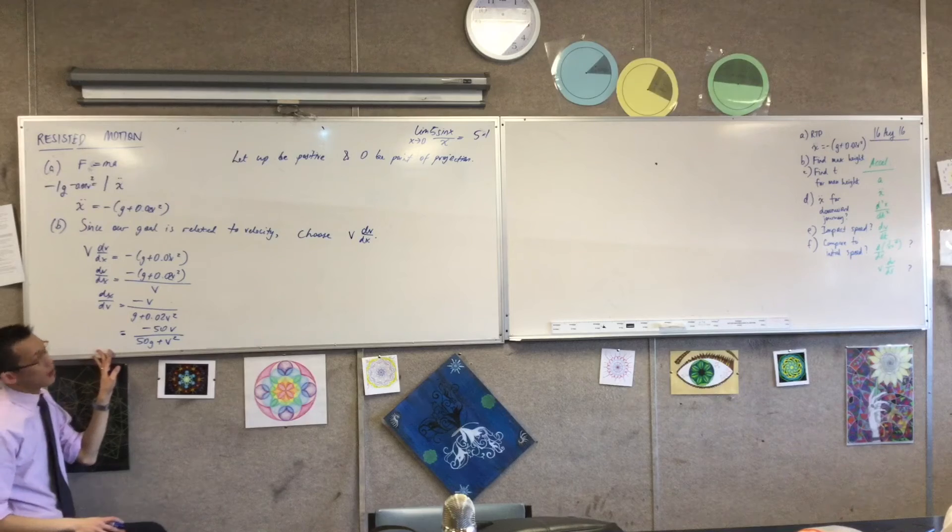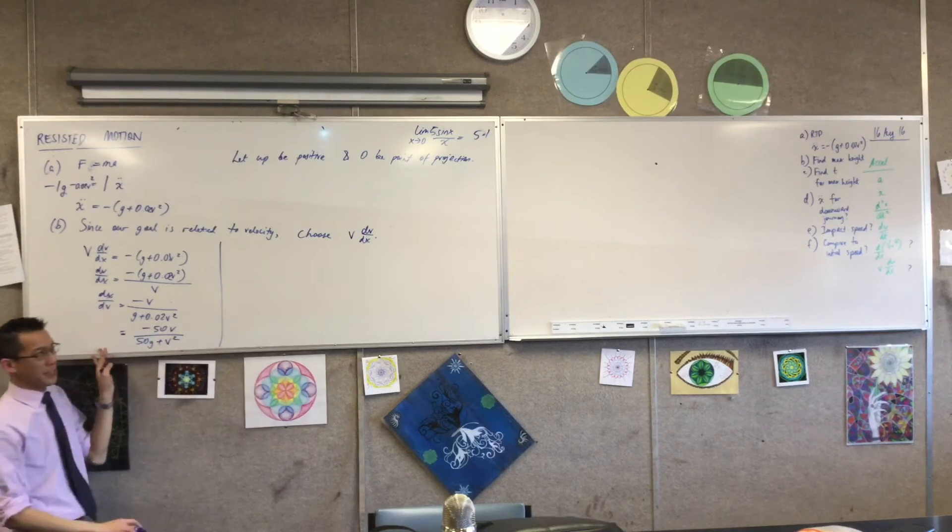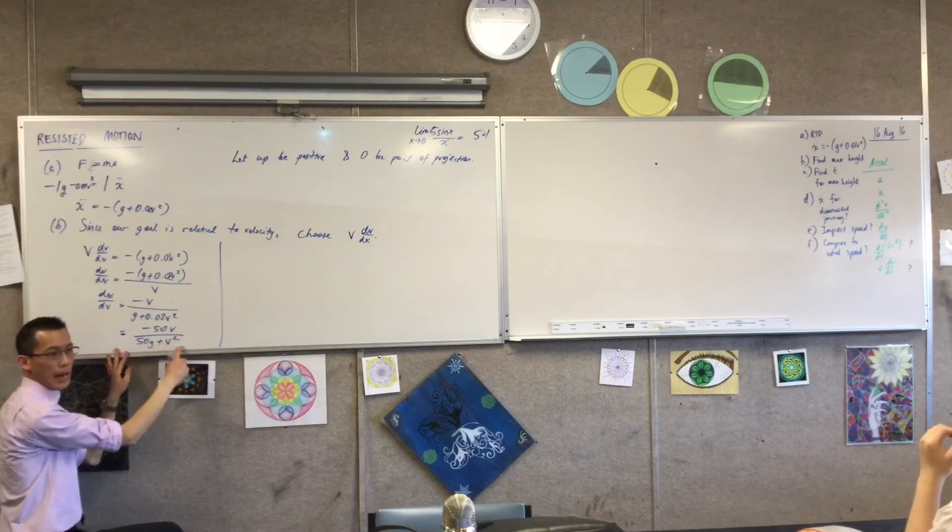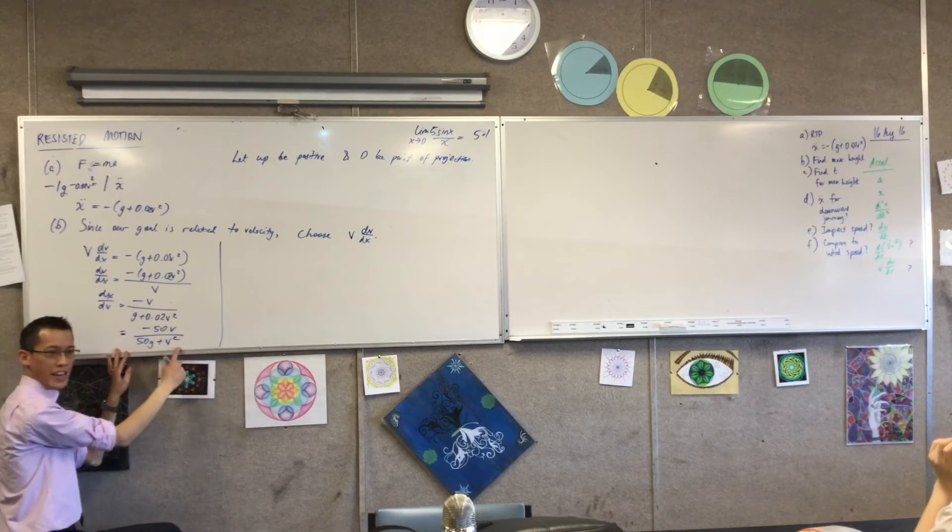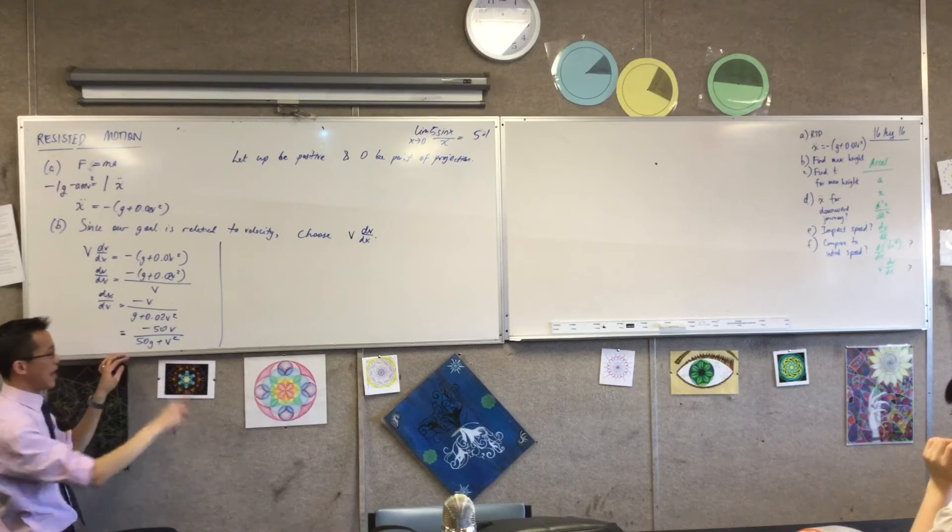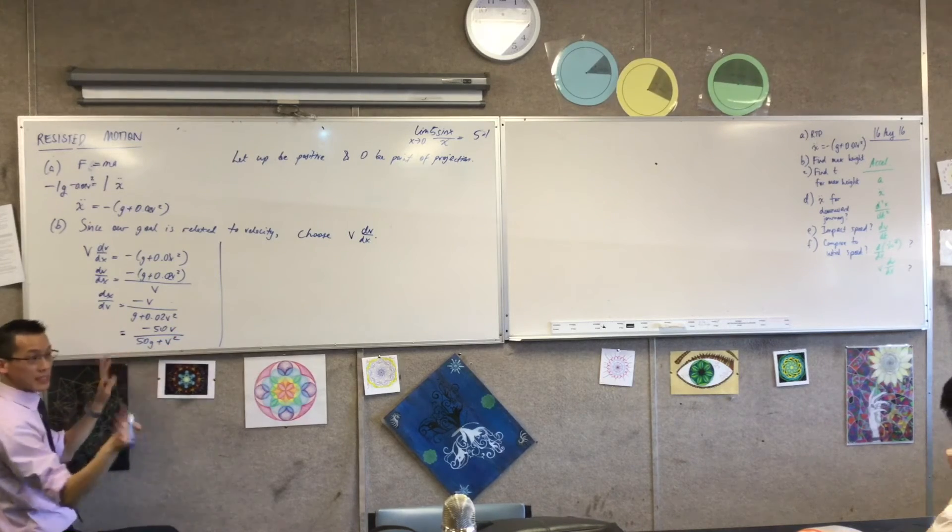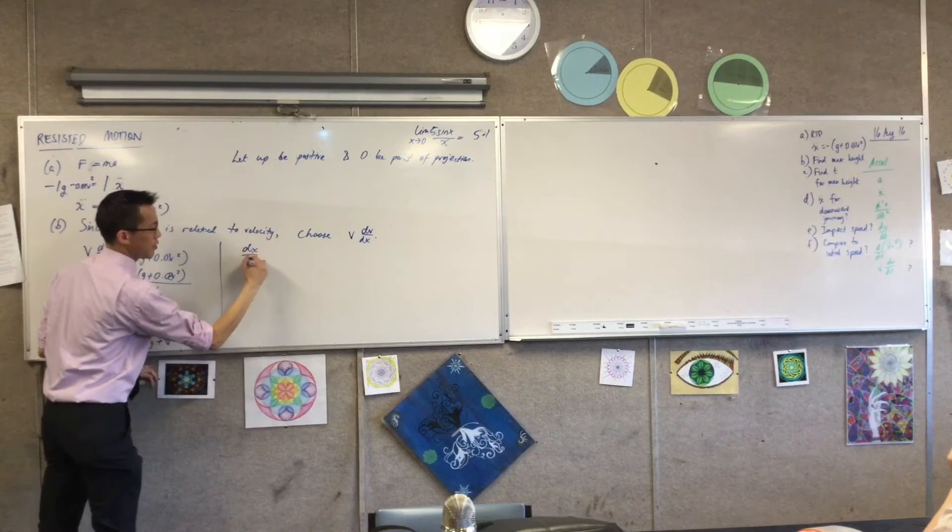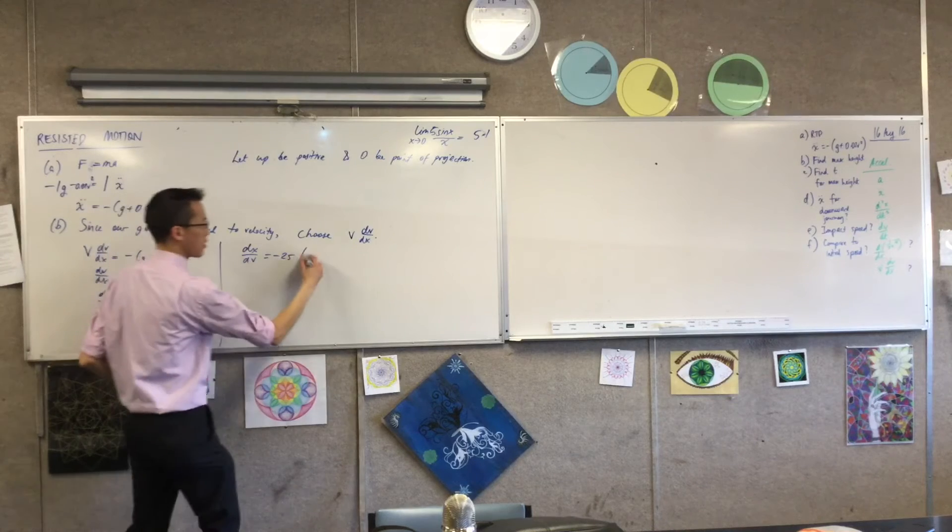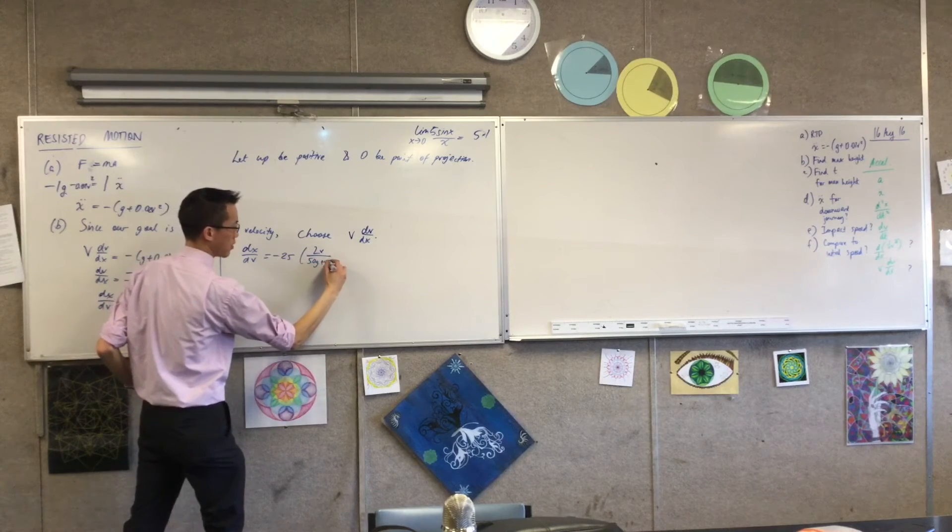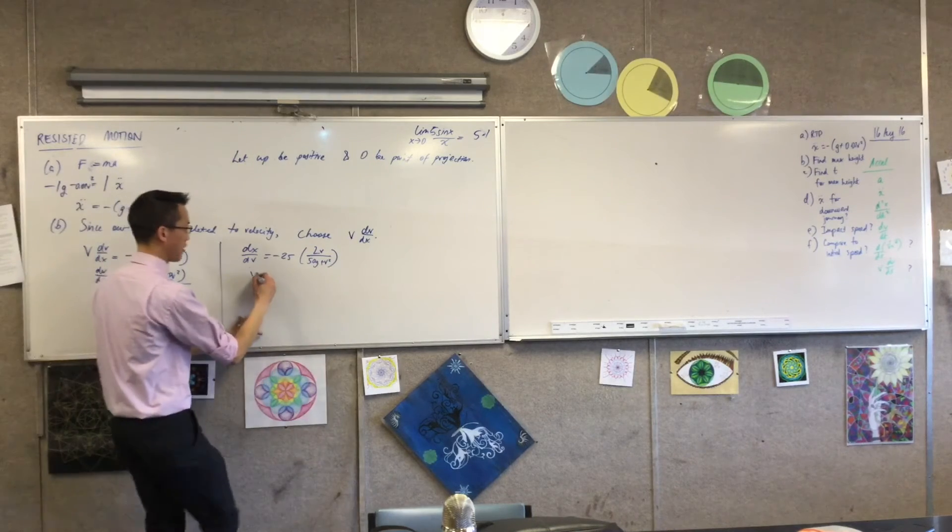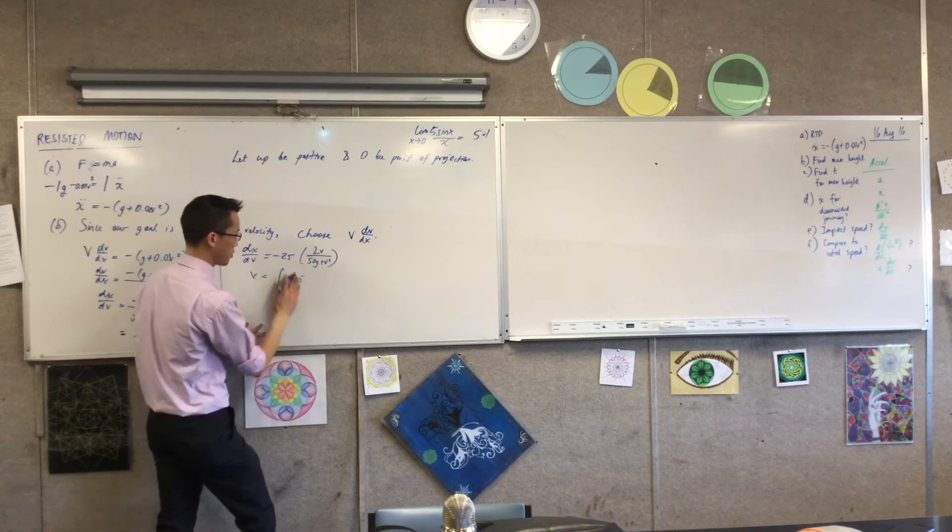Now I'm almost ready to integrate. This is going to be... What does this look like? This is f dash on f, almost, right? I need to take out a factor of negative 25. That'll leave me with a 2V and a V squared. So that's exactly what I want. So I'm going to write dX on dV. I'll take out that negative 25, this is my suggestion. And that leaves me with 2V on 50G plus V squared. Does that look good? Now I'm ready to actually integrate.